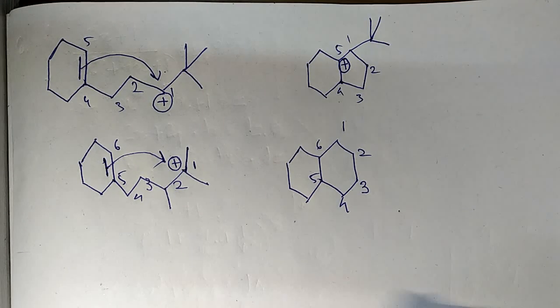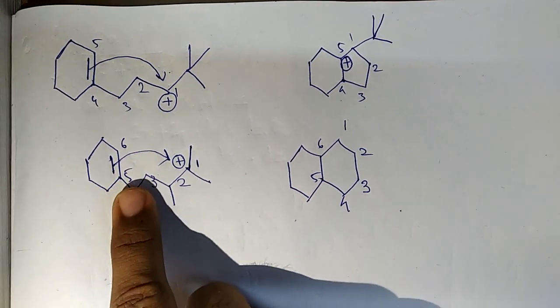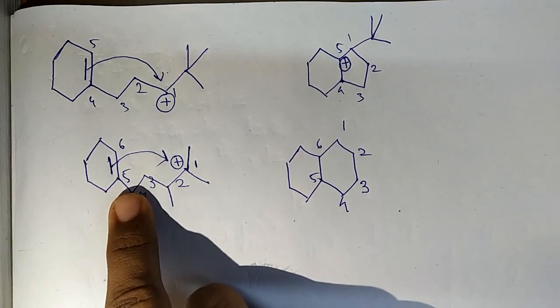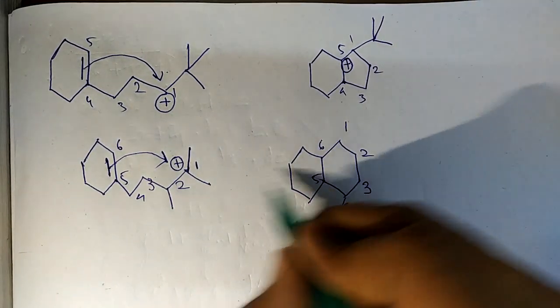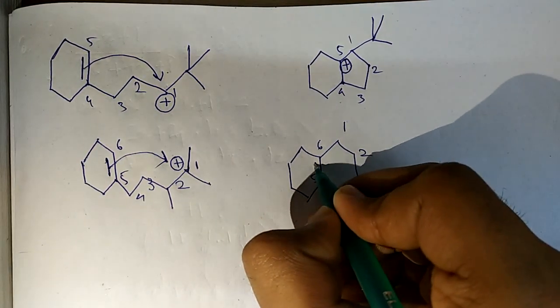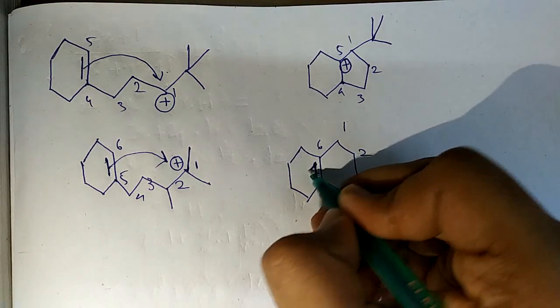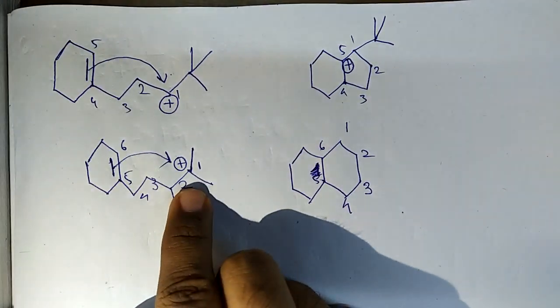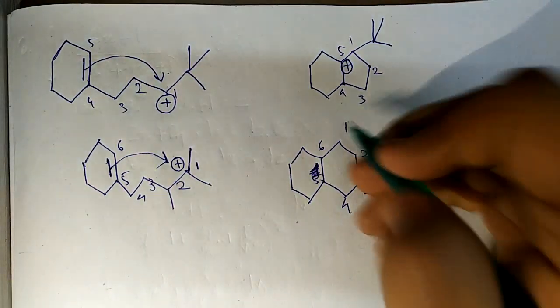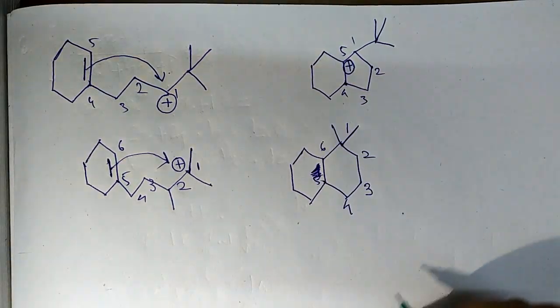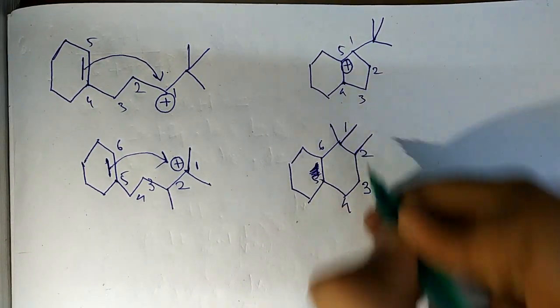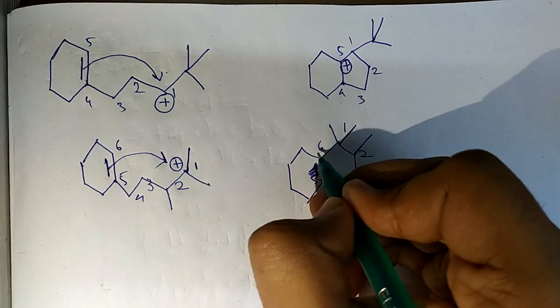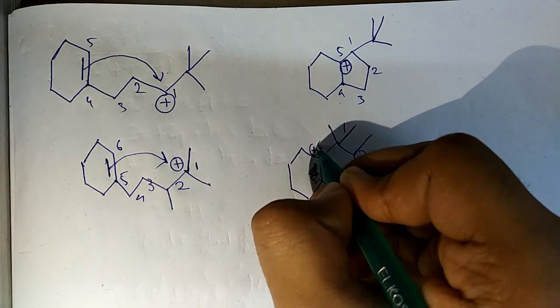In ring expansion, numbering is very important as I have explained in previous videos. Between five and six there is a pi bond. With one there are two methyl groups, and with two another methyl. Now in six we have a carbocation.